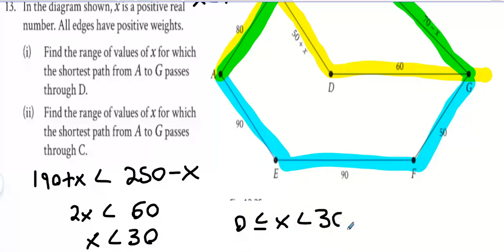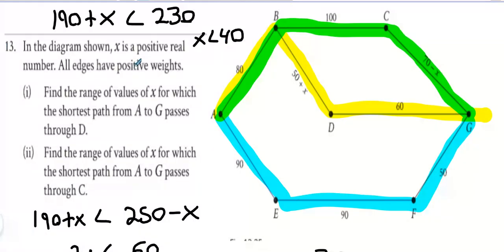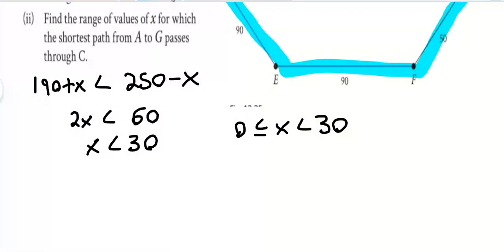So what we gonna say? X can be 0 less than or equal to x less than or equal to 30. X has to be positive, so therefore can't equal 0. It has to be 0 less than x less than or equal to 30.